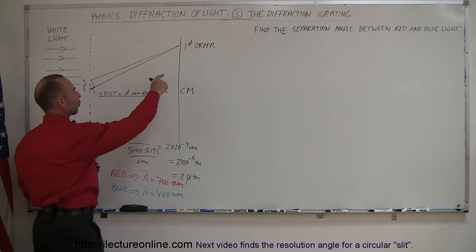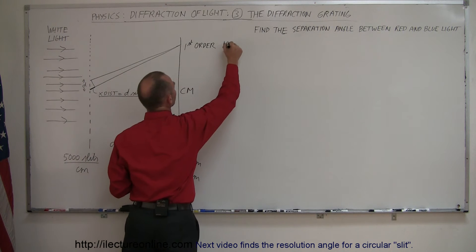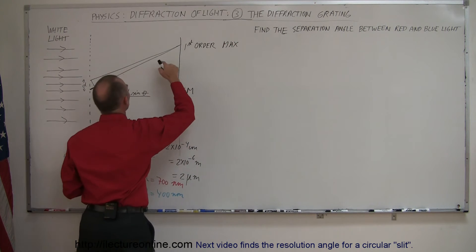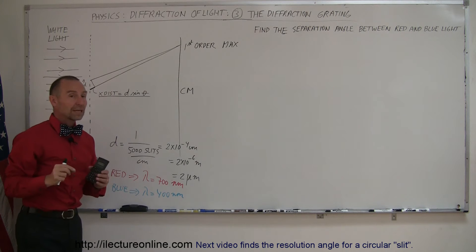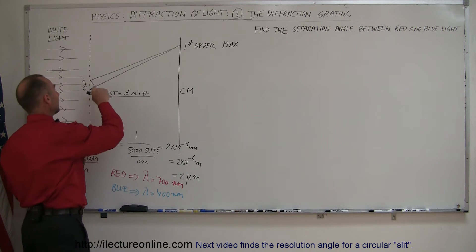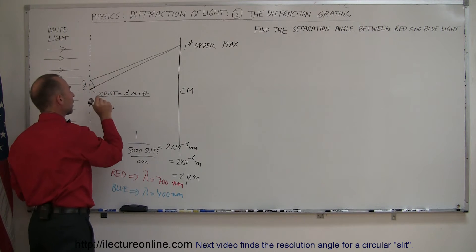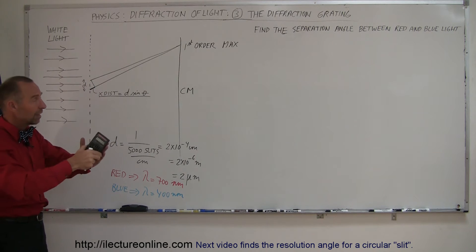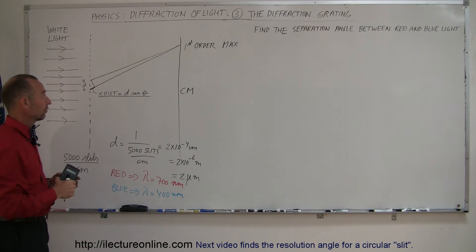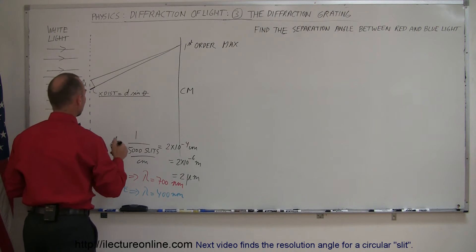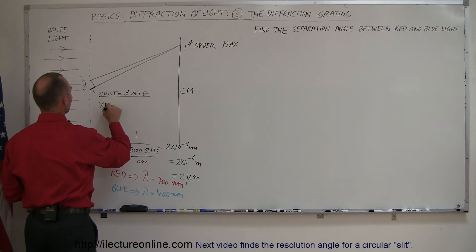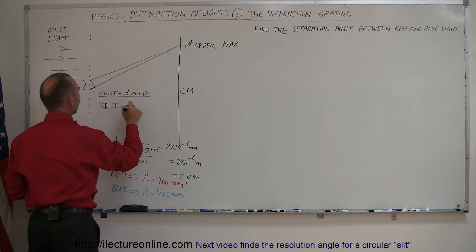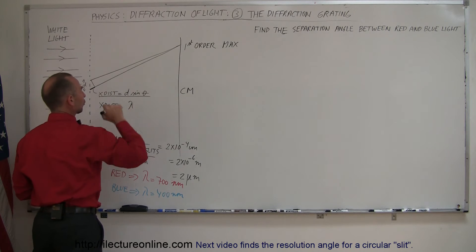To find the first order max, we can set the extra distance traveled equal to a full wavelength, because that way the top wave and the bottom wave will have a phase difference of exactly one wavelength, which puts them back into phase, which means you're going to have a constructive interference at the screen.